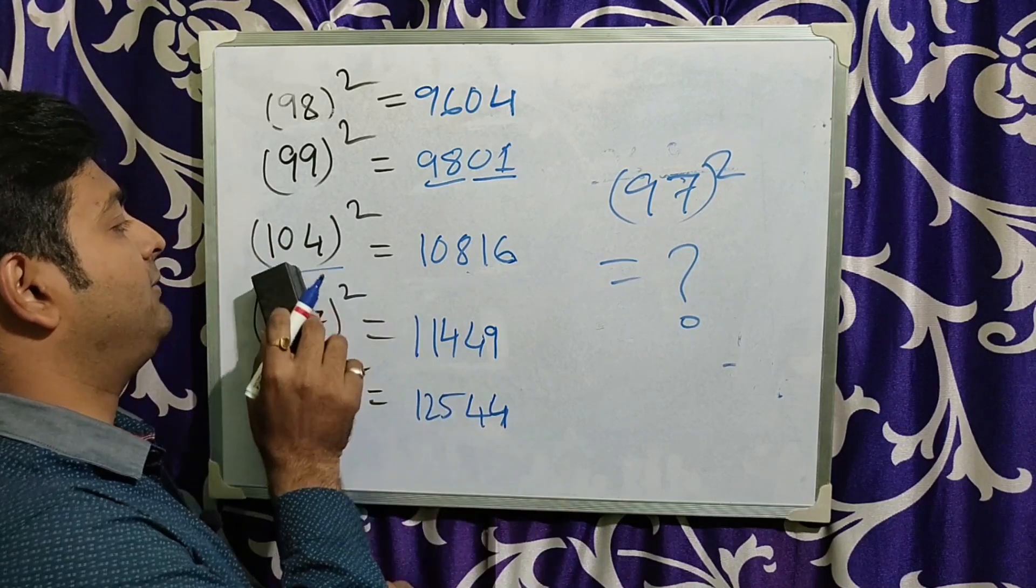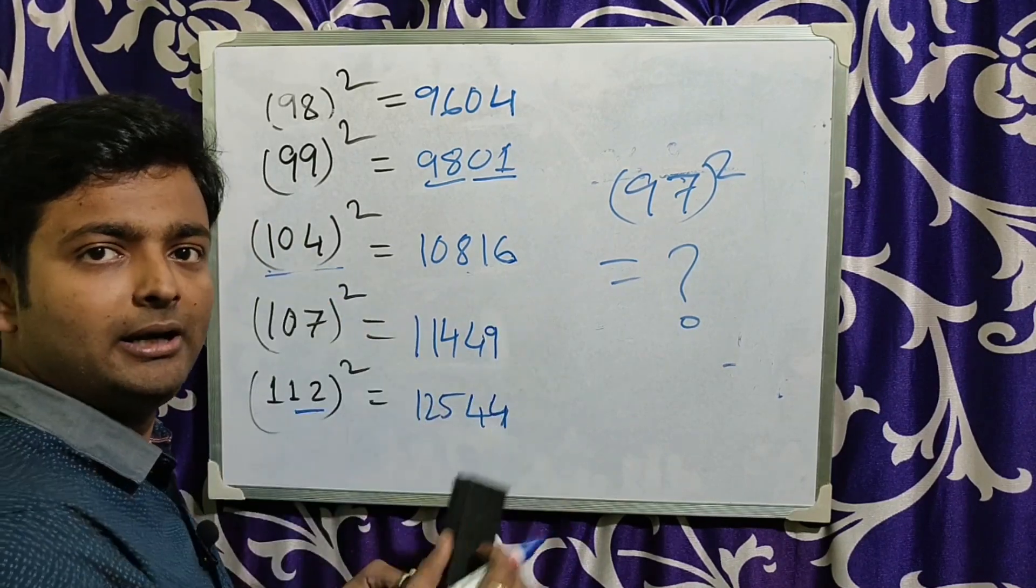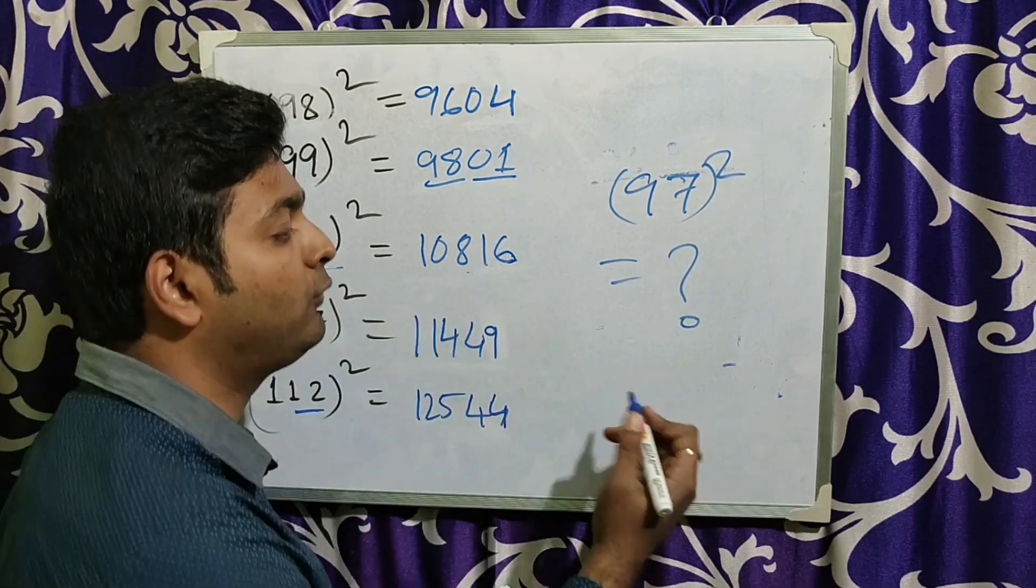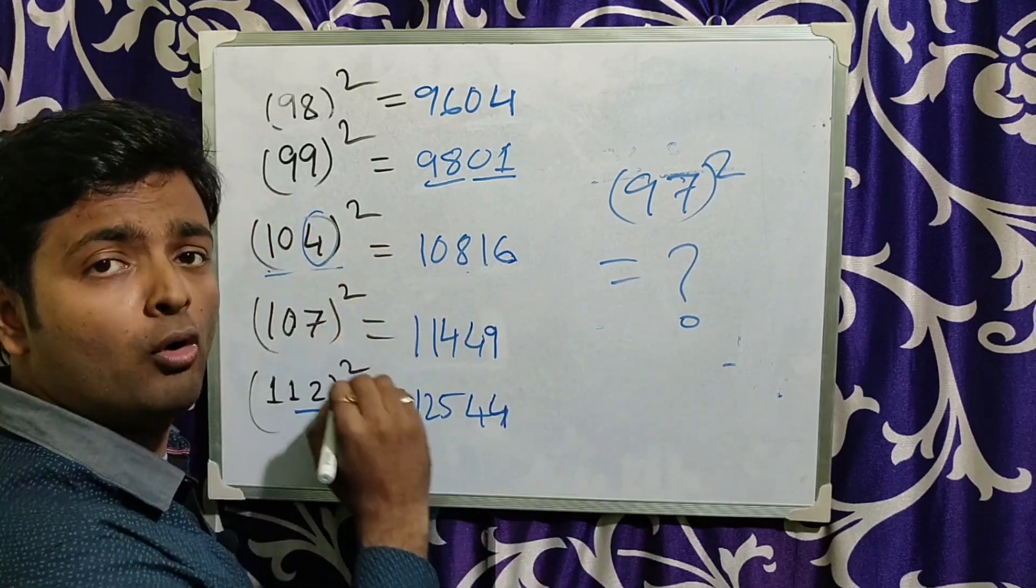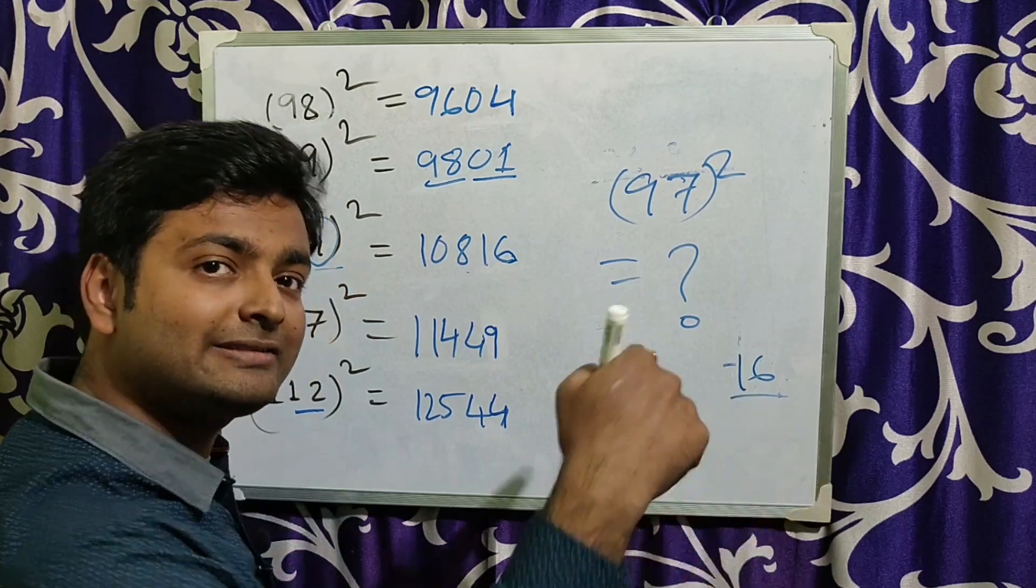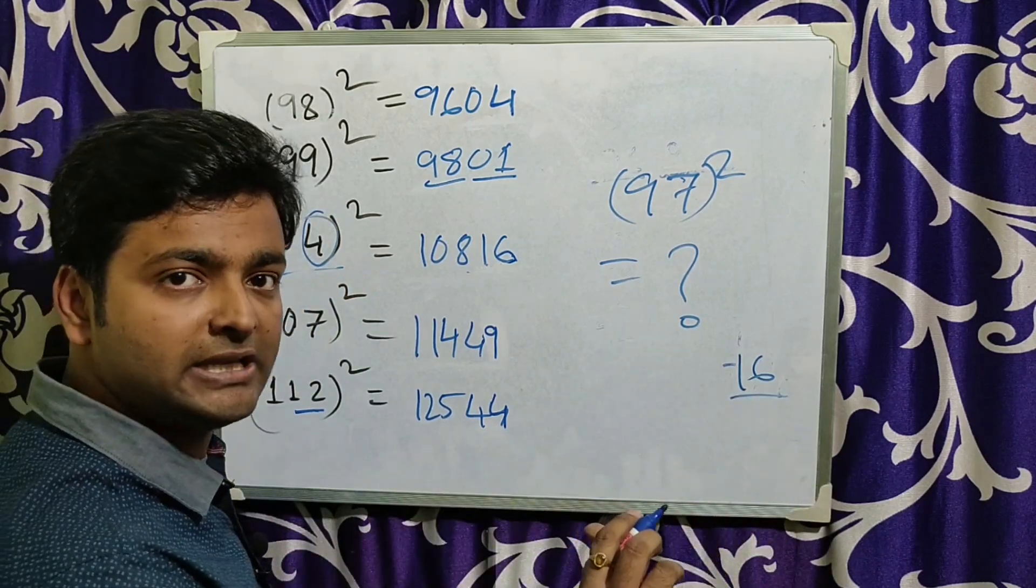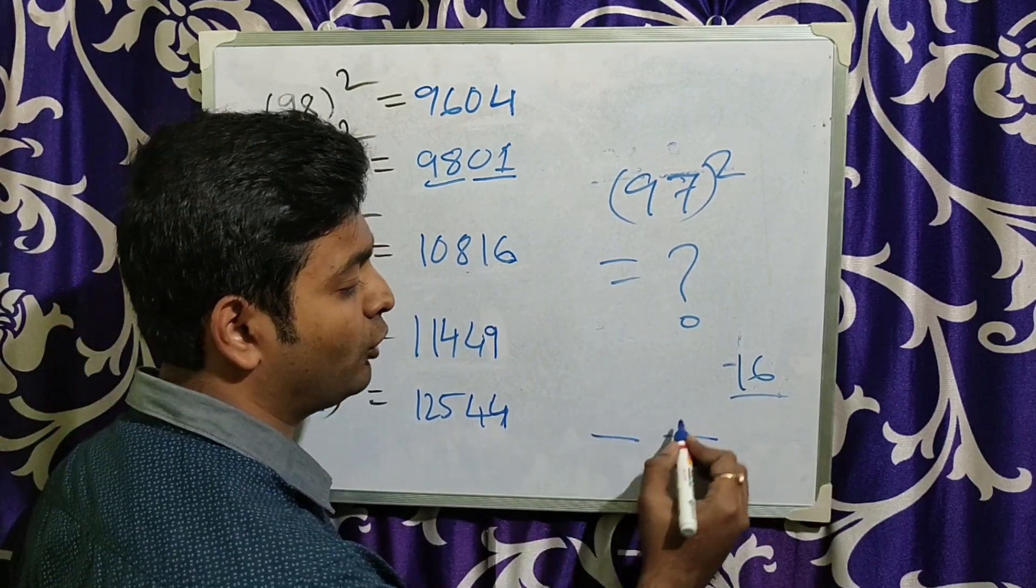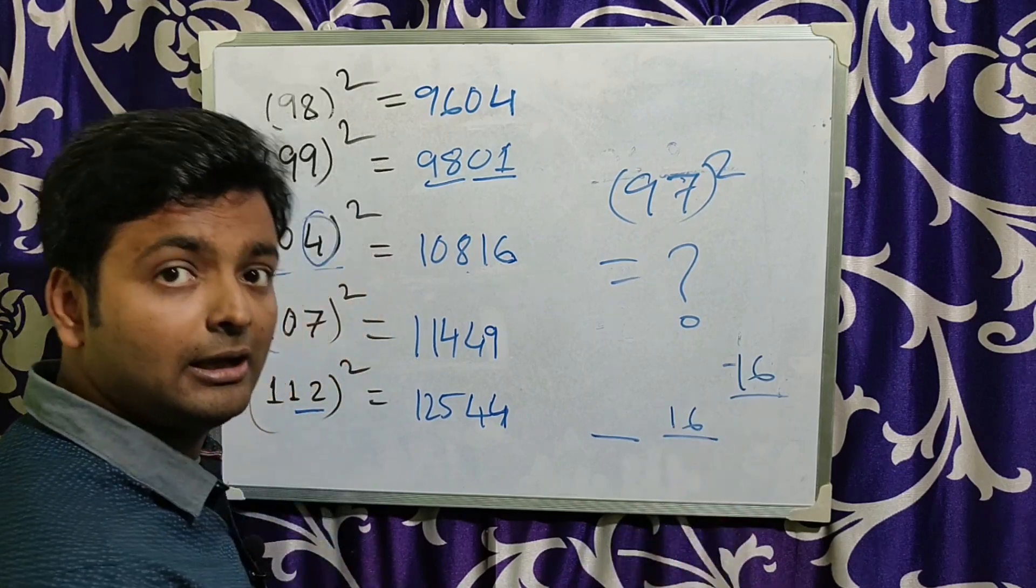Now if that number is more than 100, that is 104. 104 square, it is more than 100 by 4. So 4 square is what? 16. This is itself 2 digit, no need to change anything. Just again I have told you, this I have to write 16.